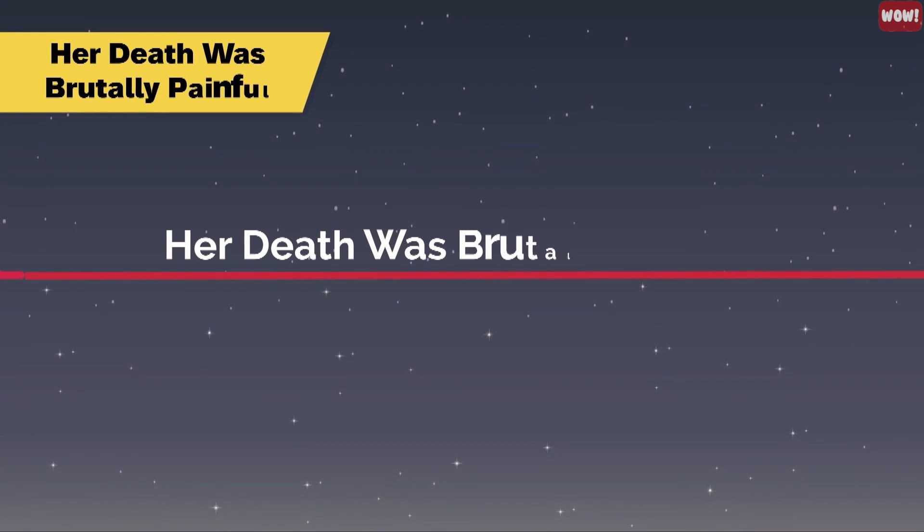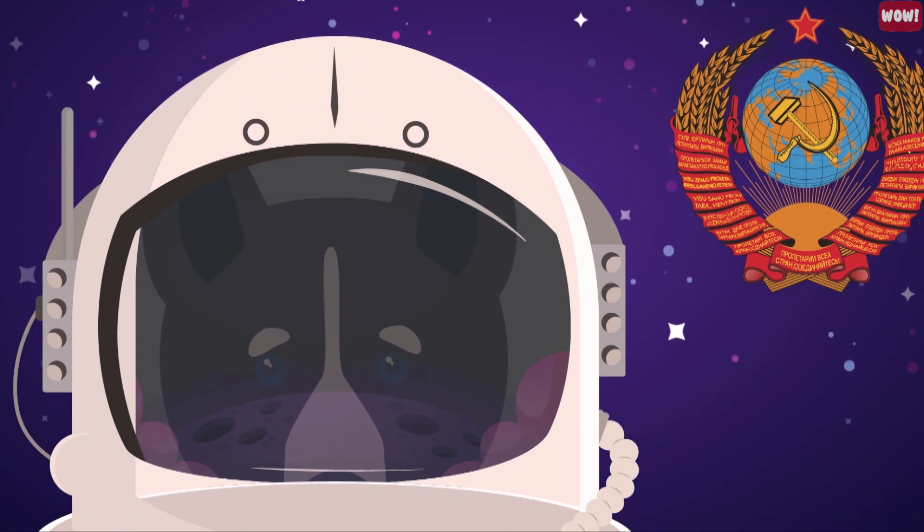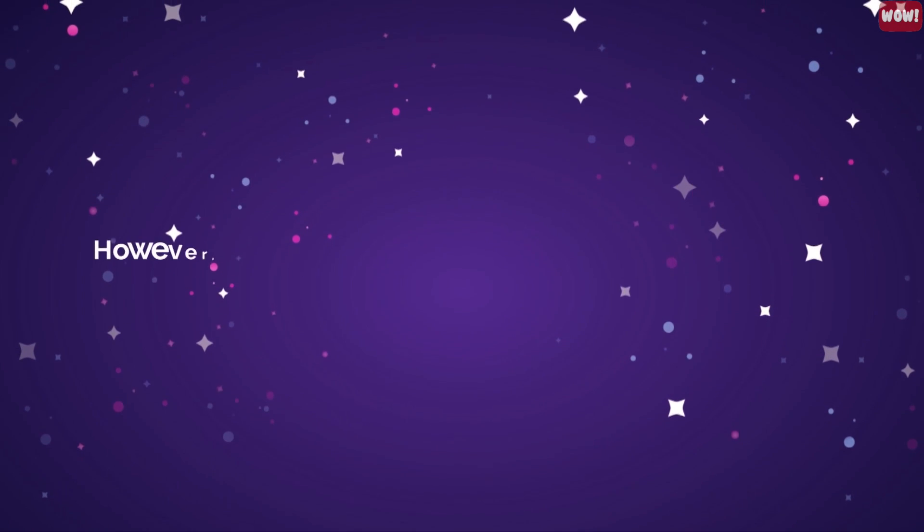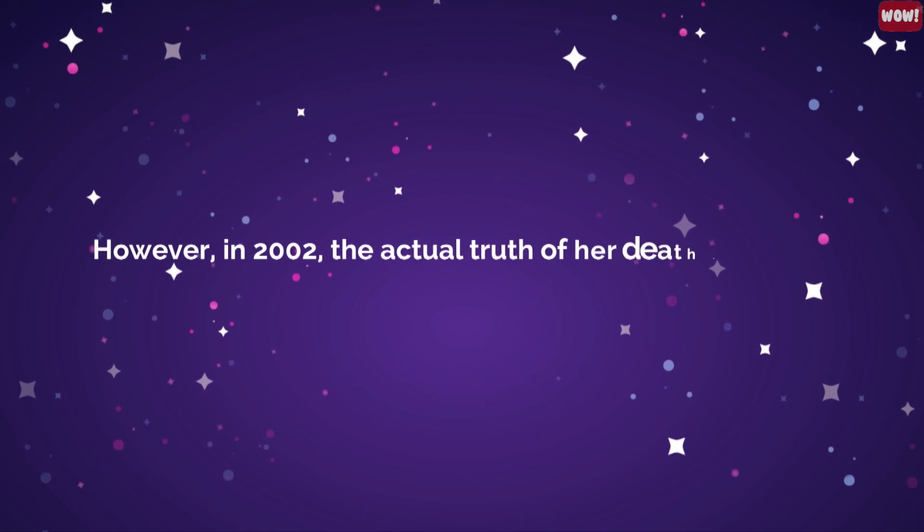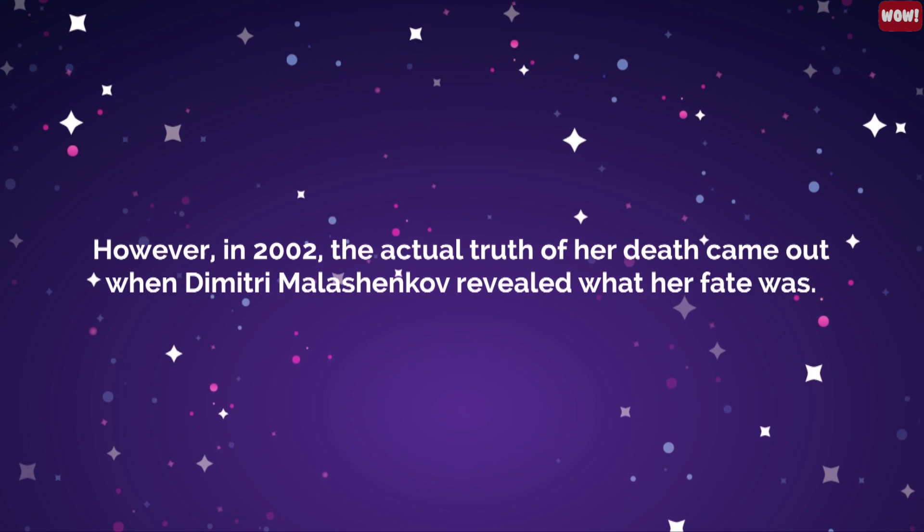Number 7: Her death was brutally painful. The Soviets claimed that Laika survived several days in Earth's orbit, only dying when she ate the poisoned dog food that had been prepared for her. However, in 2002, the actual truth of her death came out, when Dmitry Malashenkov revealed what her fate was.